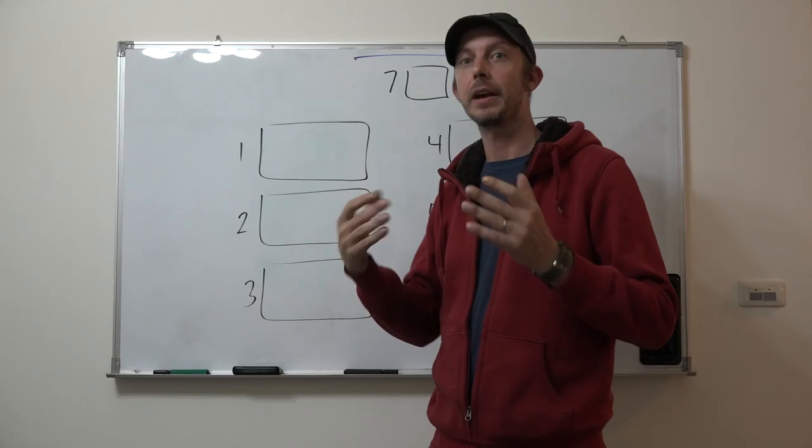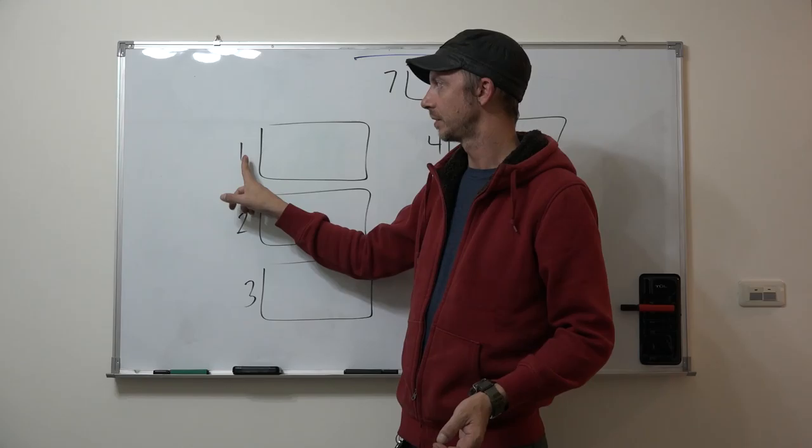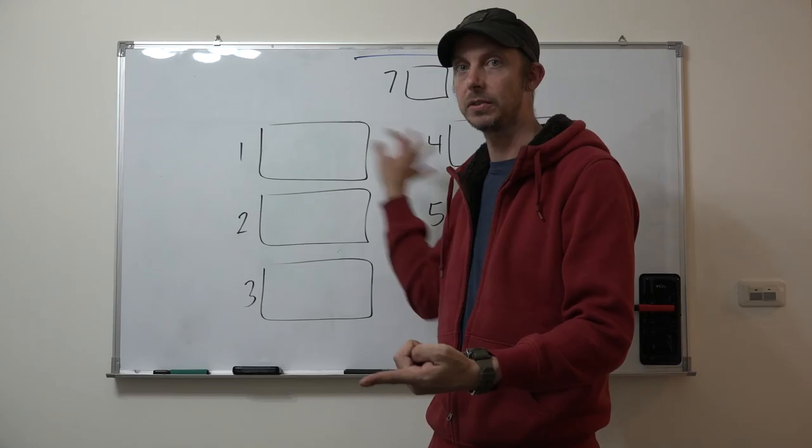Then maybe I'll say team number one, tell me one color. So maybe they say red. Okay, red, great. That is an acceptable answer. You are team one, you need to choose another number. So their answer is two parts: they need to say an answer to that category and then choose another number.